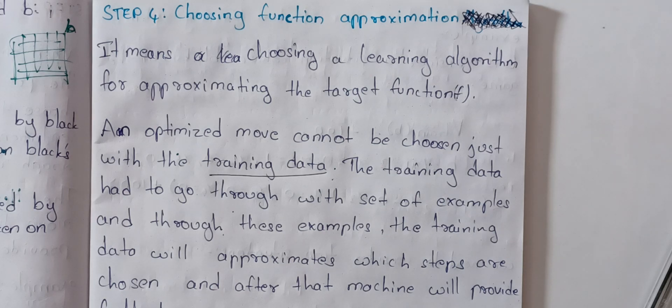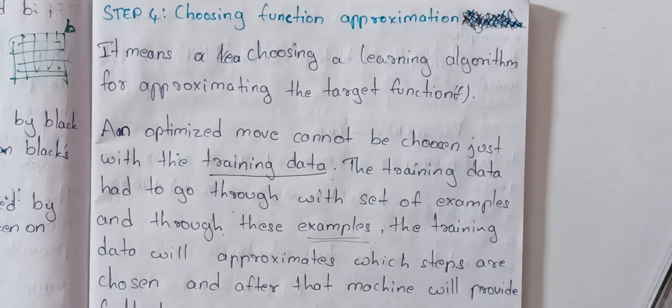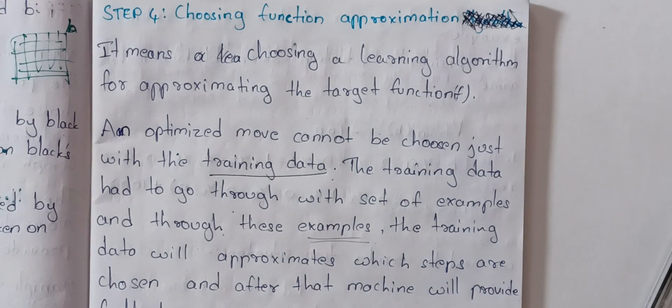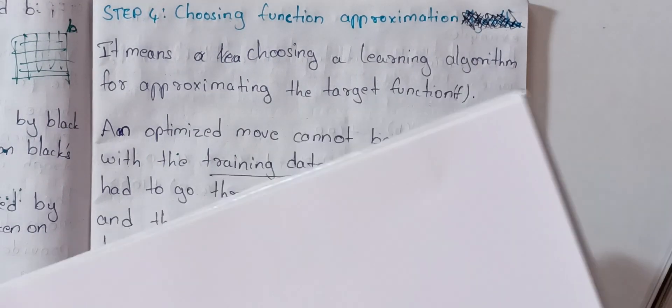Training examples — also called training experience or training data — are chosen in Step 1. We will decide the next step and try our resources. We will use training data and training examples. For example, I have a board state, so I have this formula.